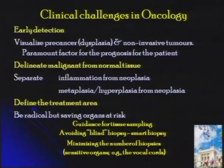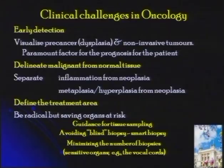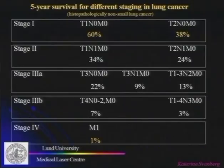Another important aspect is to try to separate inflammation from neoplasia, because inflammation may look exactly the same as early cancer to the naked eye. But the treatment should be very different if it's an inflammation versus an early cancer or pre-cancer. We also need to define the treatment area, which is not always easy. Here again, we can use optical techniques to show where the tumor borders are — particularly in organs like the brain, where it is crucial not to remove normal tissue.